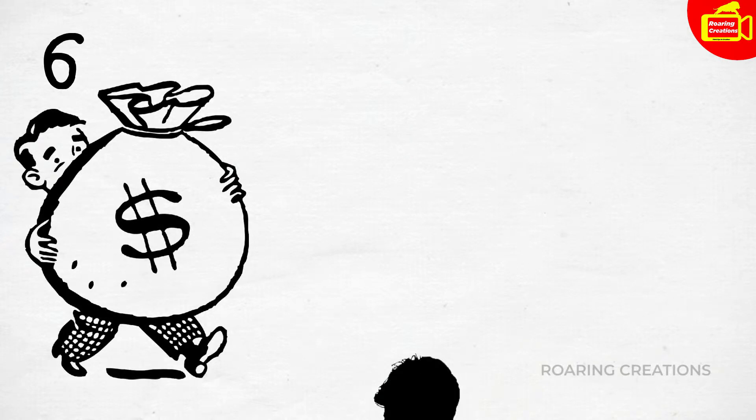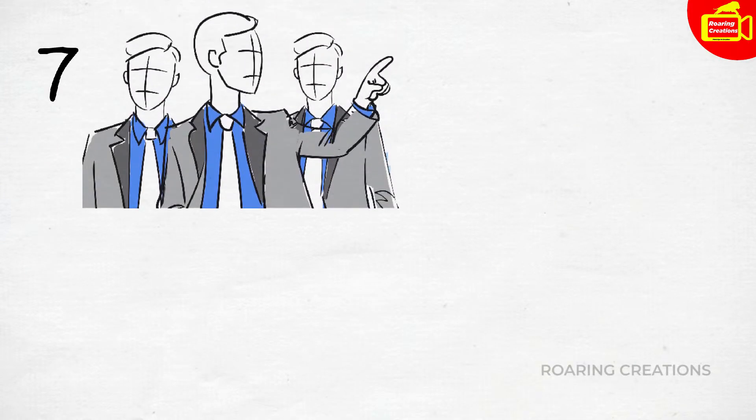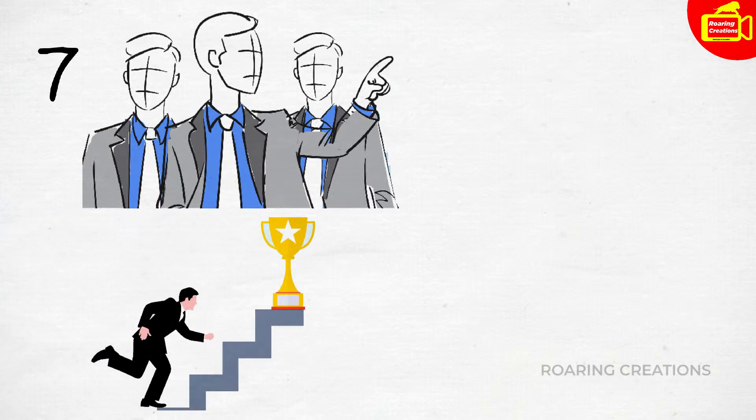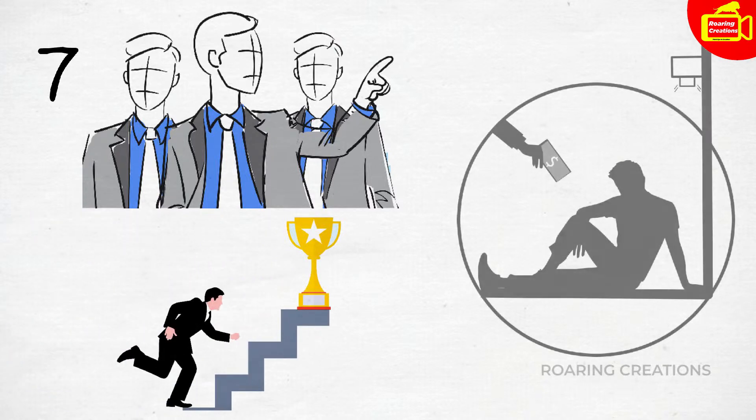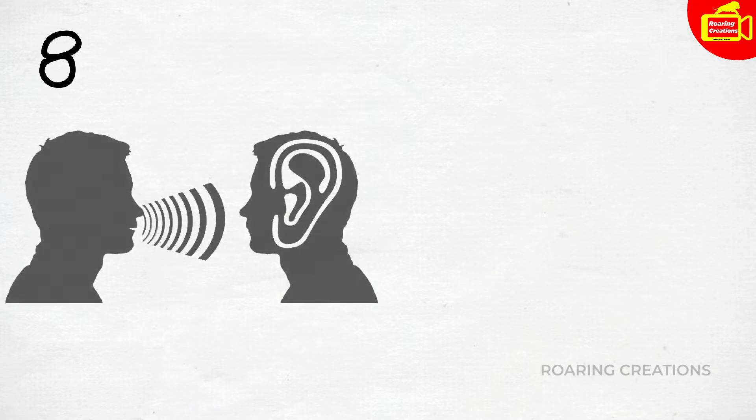Tip number six: Accept one thing, that whatever you do, you do for your own peace and benefits. So don't behave fake, just be real. Tip number seven: Don't allow others to take your life decisions. Don't be too dependent on anyone for anything.